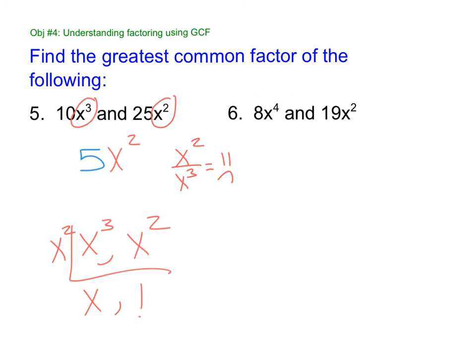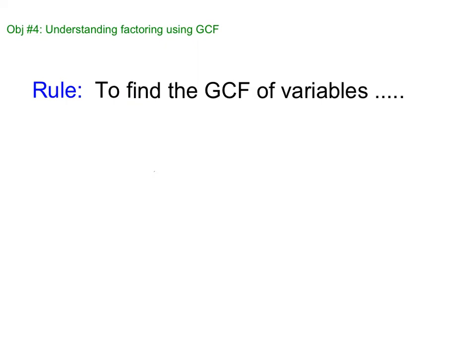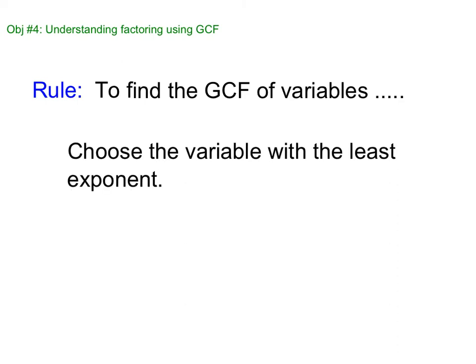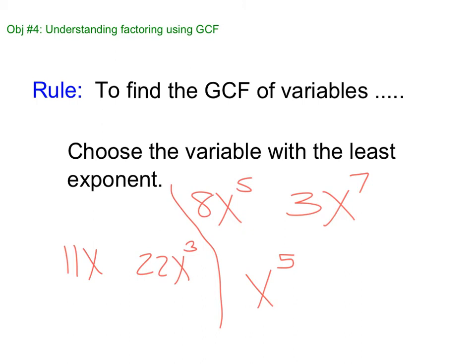So using that logic, what do you think the answer to number six is? Well, eight and 19. 19 is prime. So it doesn't have a number GCF. So it's one. And then it's just X squared. And here's the down and dirty trick for this. All you're going to do is pick the smaller X. Choose the variable with the least exponent. So if I have 8X to the 5th and 3X to the 7th, it's going to be X to the 5th. I take whichever one is smaller. Pick whichever exponent is smaller. That's your GCF. Pick your smaller exponent. If we have 11X and 22X to the 3rd, well, my GCF of 11 and 22 is 11. And then what's smaller? X or X cubed? X.